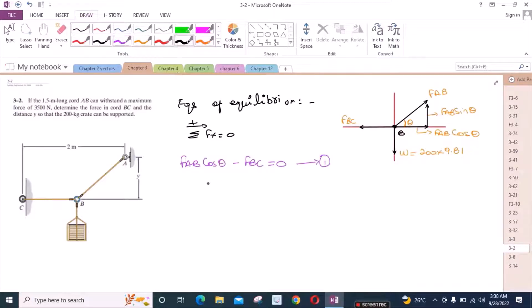And we have another equation which is sum of the forces in Y direction equals to zero. I am considering up direction as positive. So we have FAB sin theta minus the weight which is 200 into 9.81 equals to zero.